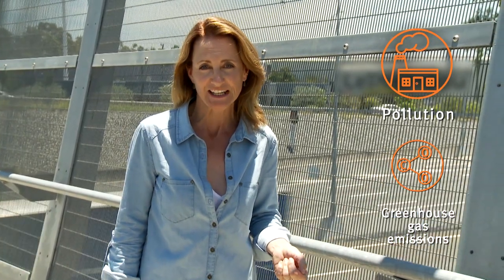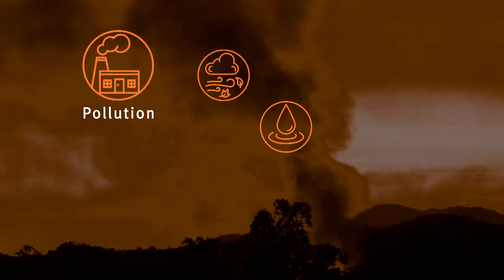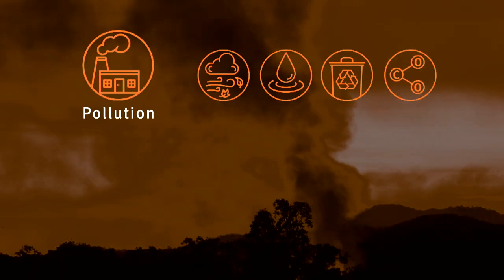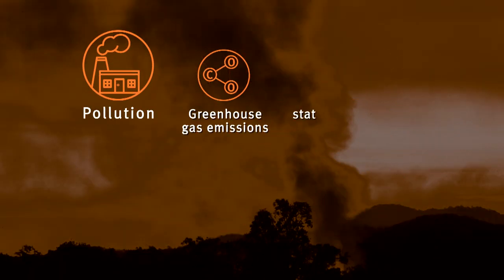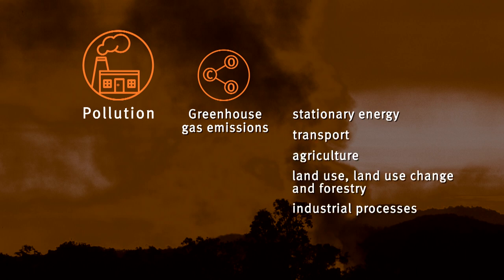Queenslanders are concerned about climate change and there's strong public interest in taking action. The greenhouse gas emissions sub-theme is separated into seven sectors. Climate change is linked to human-induced increases in greenhouse gas emissions produced by each of these sectors. In response, both the Queensland and Australian governments have committed to reducing greenhouse gas emissions.